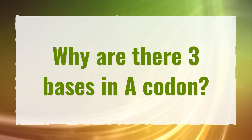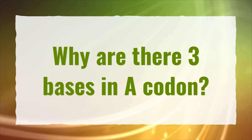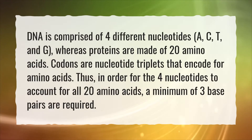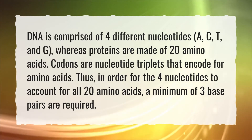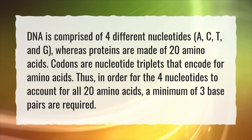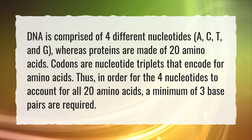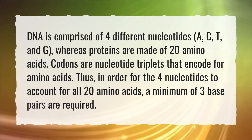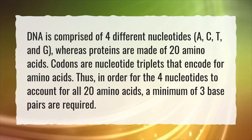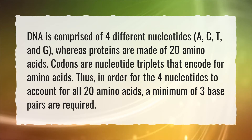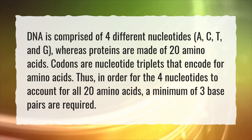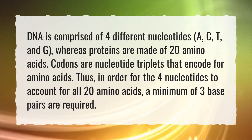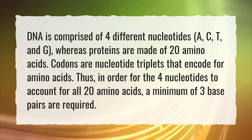Why are there three bases in a codon? DNA is comprised of four different nucleotides: A, C, T, and G, whereas proteins are made of 20 amino acids. Codons are nucleotide triplets that encode for amino acids. Thus, in order for the four nucleotides to account for all 20 amino acids, a minimum of three base pairs are required.